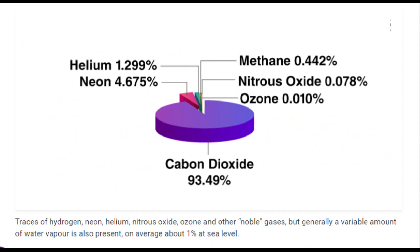Looking at the pie chart, the other gases in the atmosphere include helium, neon, methane, nitrous oxide, ozone, and carbon dioxide. Traces of hydrogen, neon, helium, nitrous oxide, ozone, and other noble gases are present. A variable amount of water vapor is also present — about 1% at sea level on average. Helium is 1.299%, neon is 4.675%, methane is 0.442%, nitrous oxide is 0.078%, ozone is 0.010%, and carbon dioxide is 93.49%.